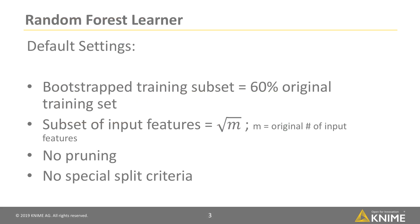All other parameters are predetermined. The size of the bootstrap training subsets is around 60% of the original training set. The size of the subset of input features is set as square root of M, where M is the original number of input features. No pruning or special split criteria are used.